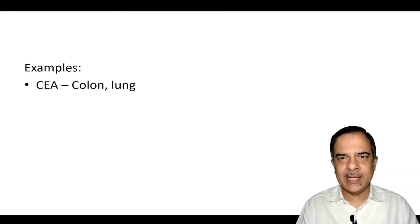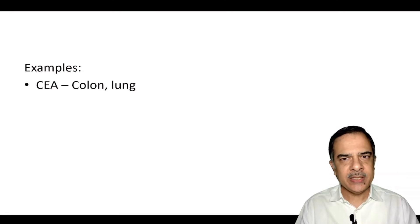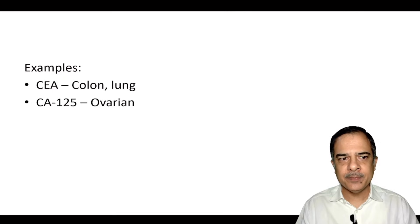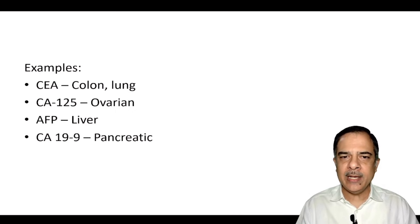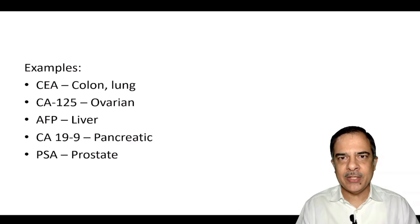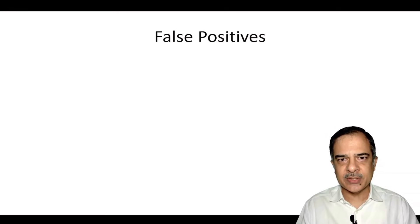Some examples of cancer markers are: CEA, which can be elevated in colonic or lung cancer; CA-125 in ovarian cancer; alpha-fetoprotein in liver cancer; CA19-9 in pancreatic cancers; and PSA (prostate specific antigen) in prostatic cancers.